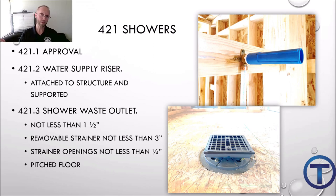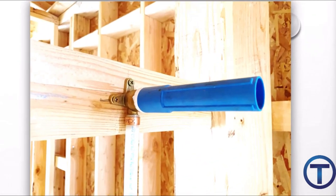Section 4.21 talks about showers — there's quite a bit in here, a whole page compared to the couple of paragraphs for individual fixtures. 4.21.1 talks about approvals and standards manufacturers would have to meet. 4.21.2 talks about the water supply riser — that's the shower attachment. Whenever we have a shower head it has to be attached to the structure and supported properly. No shortcuts — we want a solid rigid shower head connection.